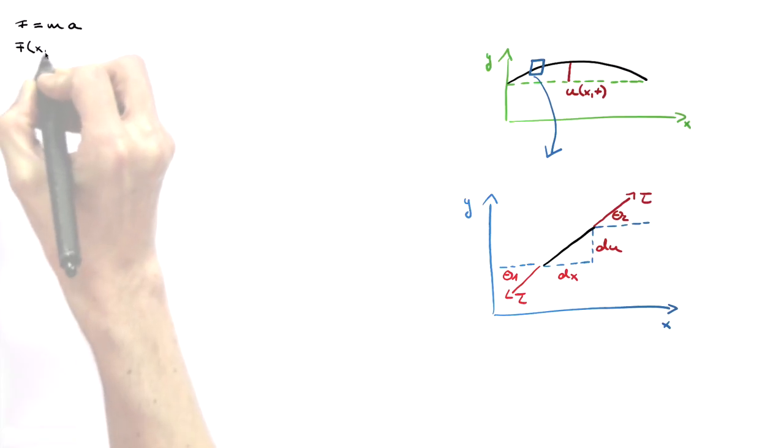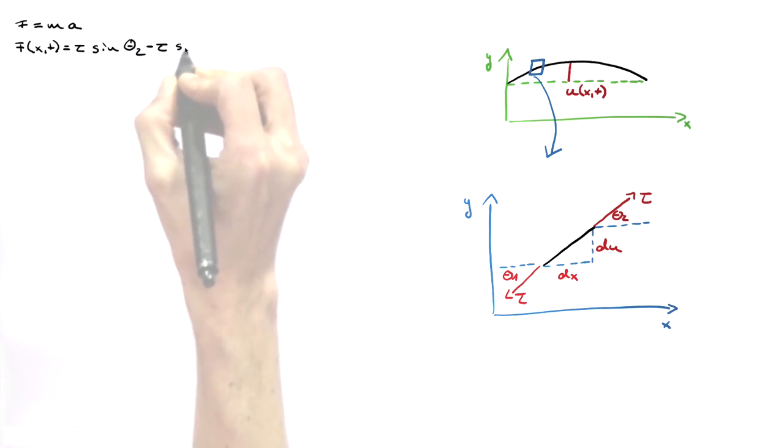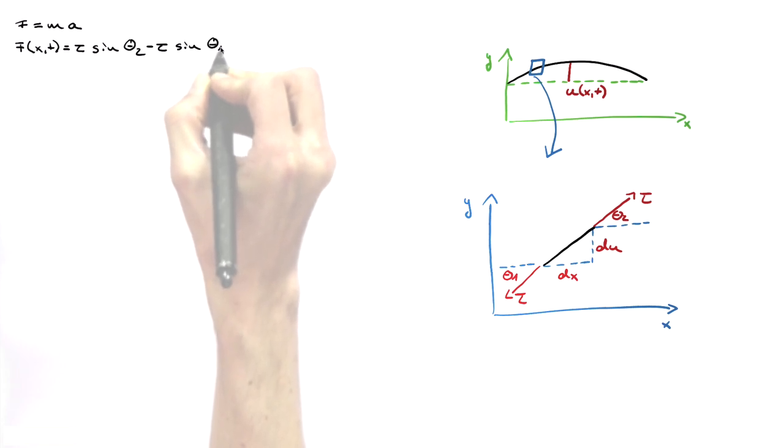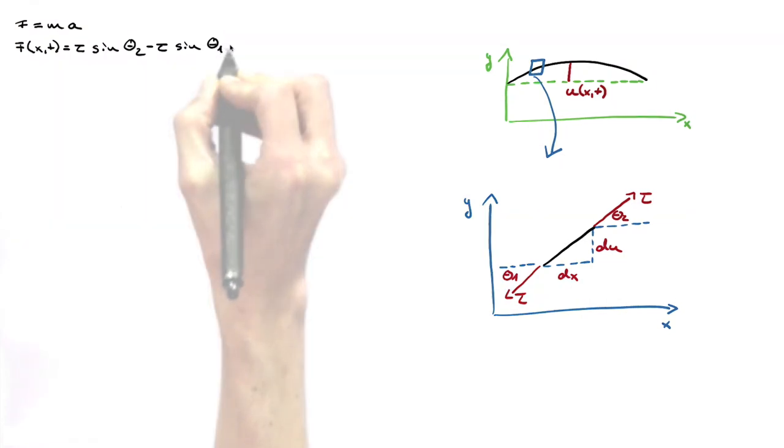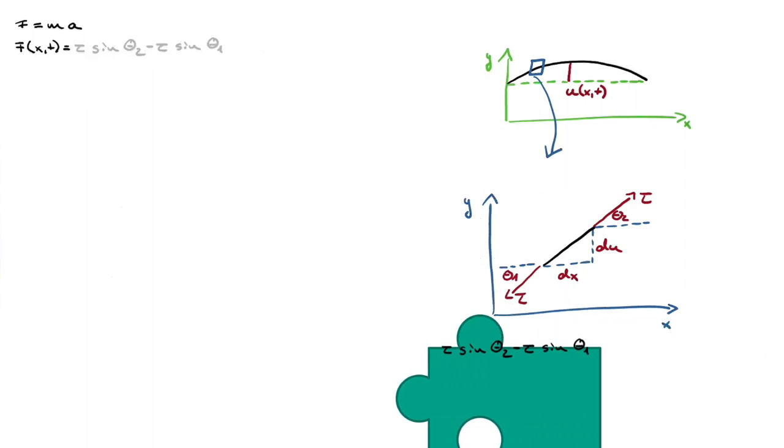Hence, the force on the upper end equals tau times sine theta 2 and the force on the lower end is tau times sine theta 1. The difference is the force acting on the section. This is the one-dimensional equation of motion for our string, the first piece of the puzzle.